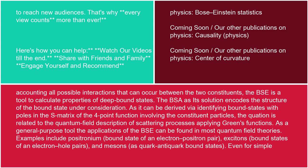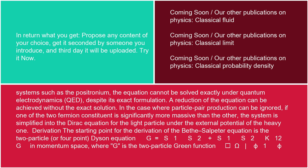Even for simple systems such as the positronium, the equation cannot be solved exactly under quantum electrodynamics, QED, despite its exact formulation. A reduction of the equation can be achieved without the exact solution. In the case where particle pair production can be ignored, if one of the two fermion constituents is significantly more massive than the other, the system is simplified into the Dirac equation for the light particle under the external potential of the heavy one.